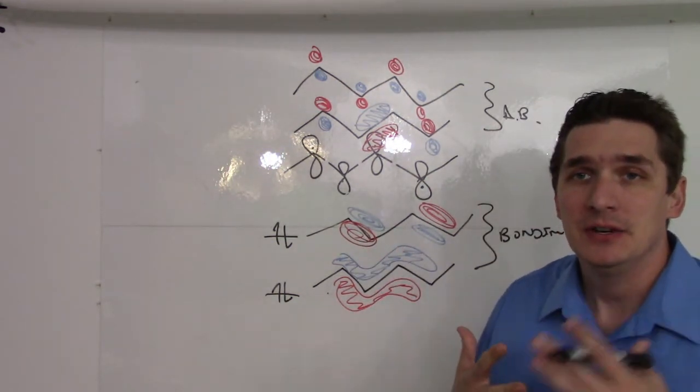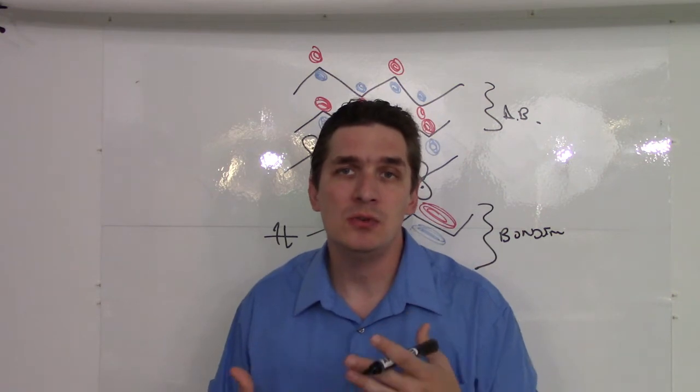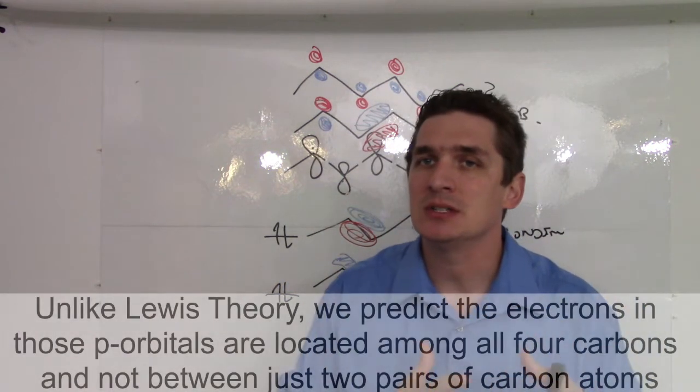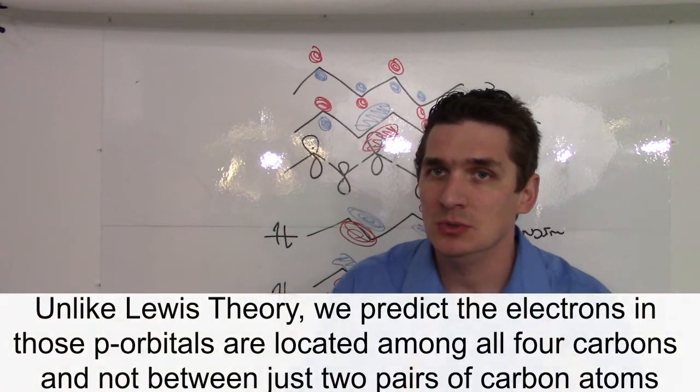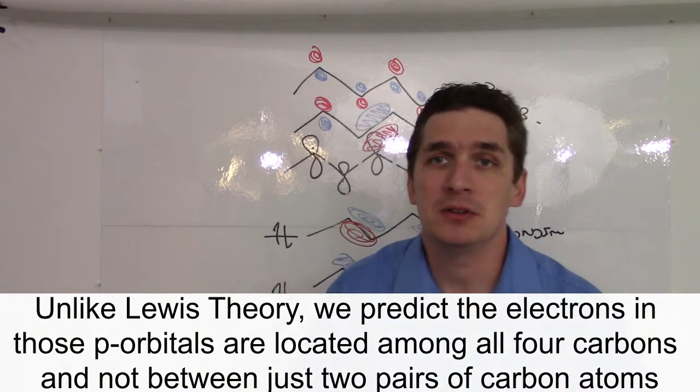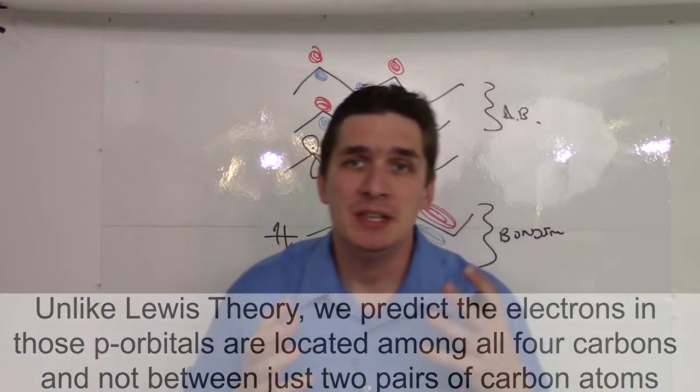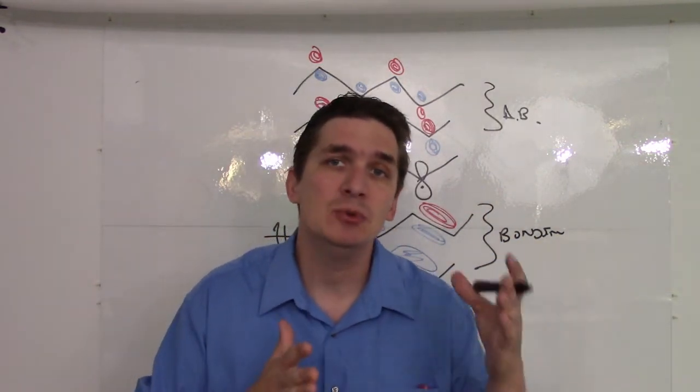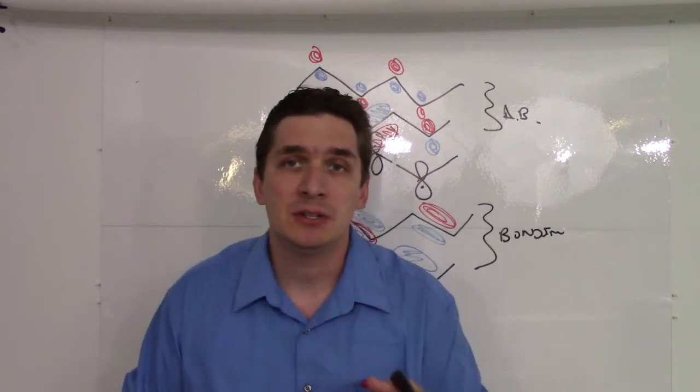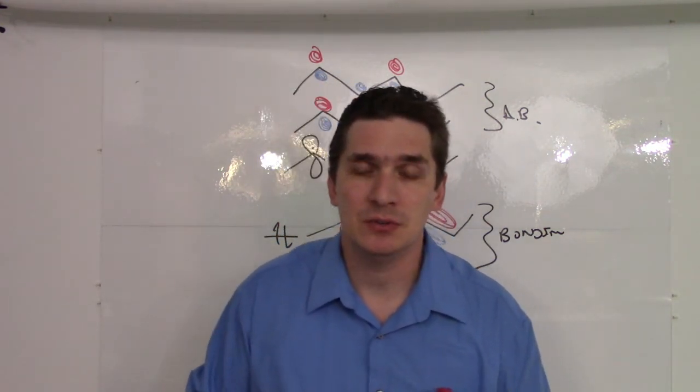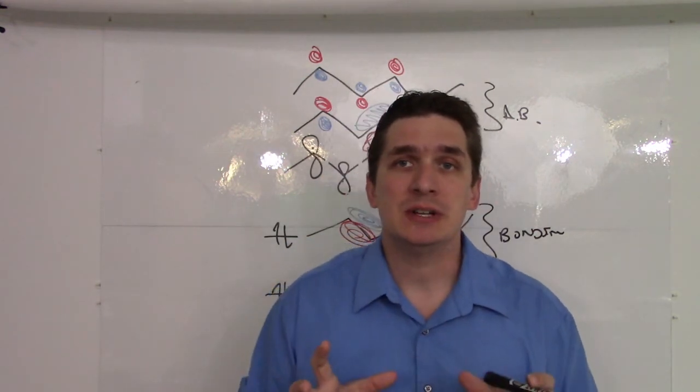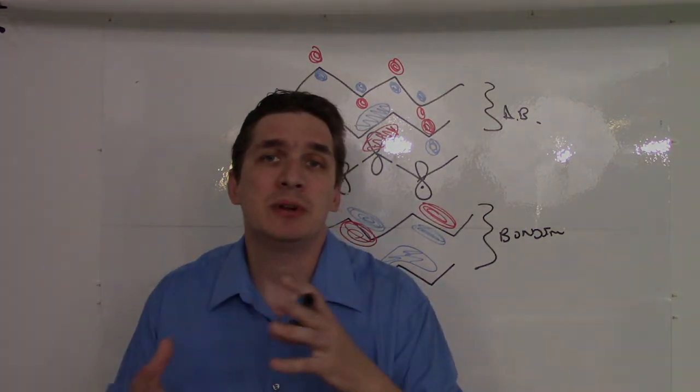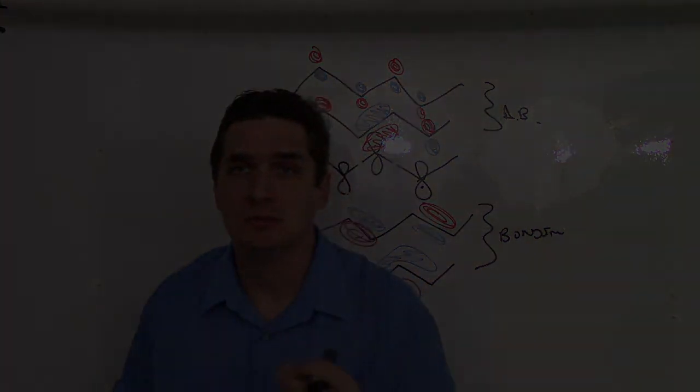But there's an important implication in this, that we're no longer, particularly with the lowest energy orbital, constraining these electrons to be between two individual atoms. They're actually spending a lot of the time spread up among the four atoms. And this is going to give rise to electron mobility. The electrons can actually move from carbon to carbon along the molecular orbitals that are generated. So, we're getting closer and closer now to understanding how aromaticity falls out from molecular orbital theory and how we're going to retroactively apply it back to Lewis theory.